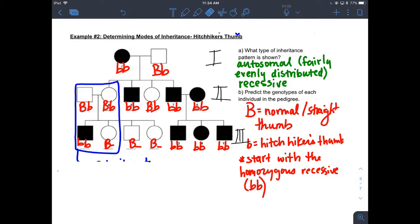We let capital B represent normal or straight thumb, little b represents hitchhiker's thumb. And now we're going to look for all of the genotypes for each of the individuals. And I've already kind of done that for you. But I want you to really pay special attention to where we start with. We always start with our affected individuals because we know in this case, if it's an autosomal recessive trait, we know that every single individual is going to have homozygous recessive genotype for this trait.